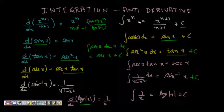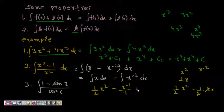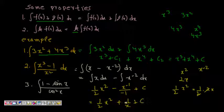For ∫x⁻² dx, we apply the power rule directly: ∫x^n dx = x^(n+1)/(n+1). With n = −2, we get x^(−1)/(−1) = −1/x. Combining with one constant: the answer is (1/2)x² + 1/x + c.